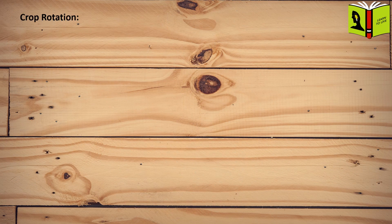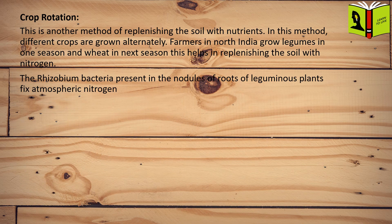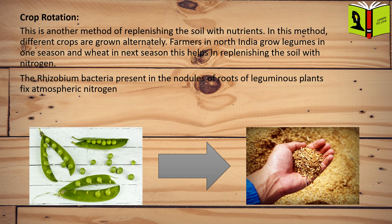Crop Rotation. This is another method of replenishing the soil with nutrients. In this method, different crops are grown alternately. Farmers in North India grow legumes in one season and wheat in the next season. This helps in replenishing the soil with nitrogen. The Rhizobium bacteria, present in the nodules of roots of leguminous plants, fix atmospheric nitrogen.